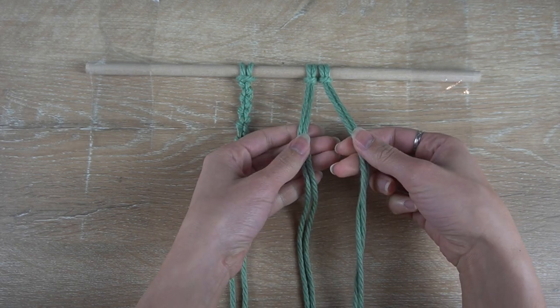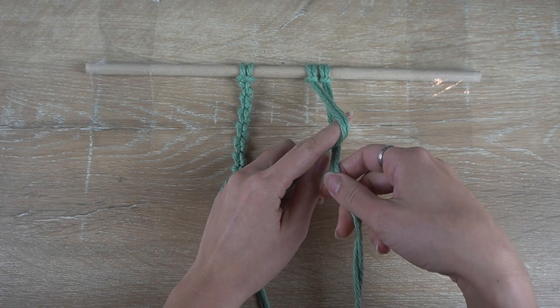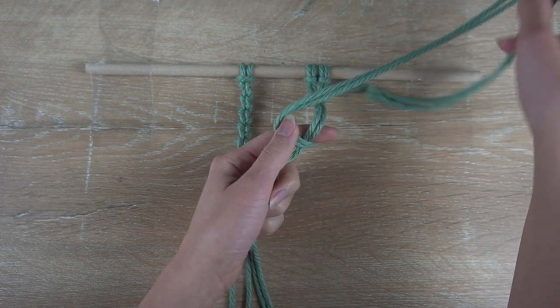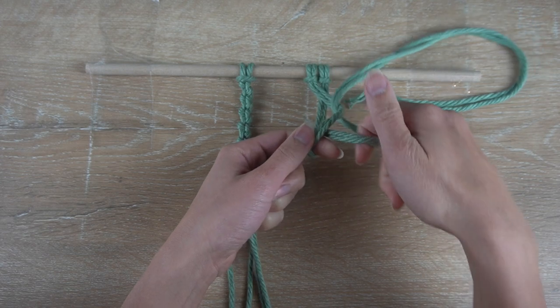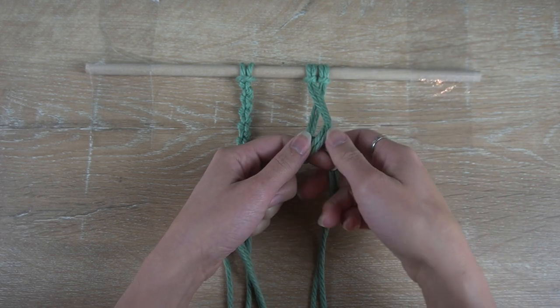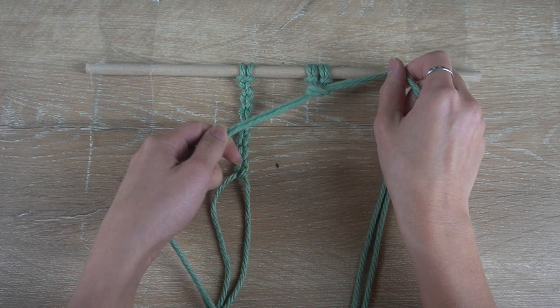Another way to make the alternating half hitch chain is similar to the first one, but instead of using two strands of cord and one strand as the working cord each time, we're going to use groups of two cords as one strand of cord.